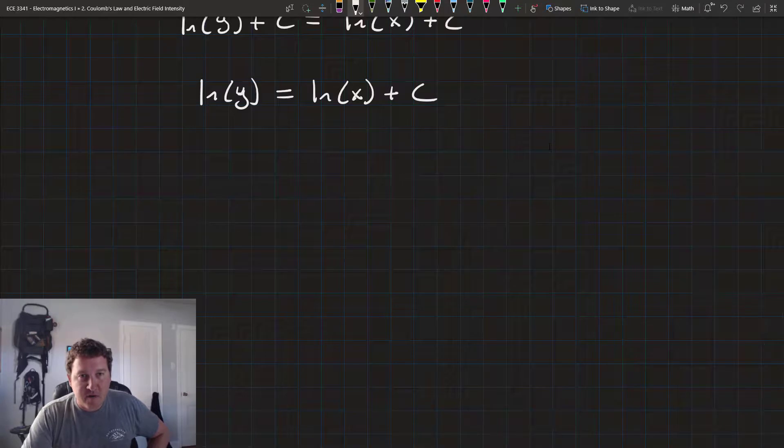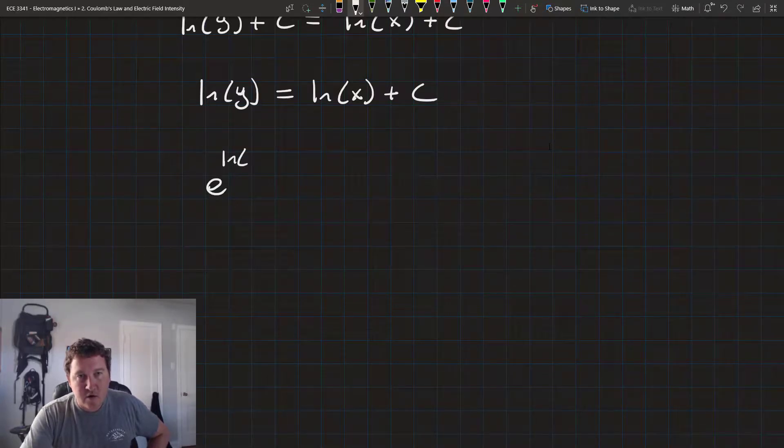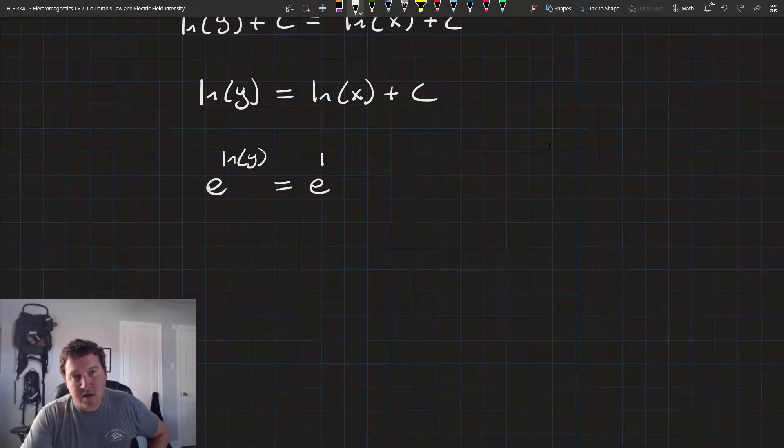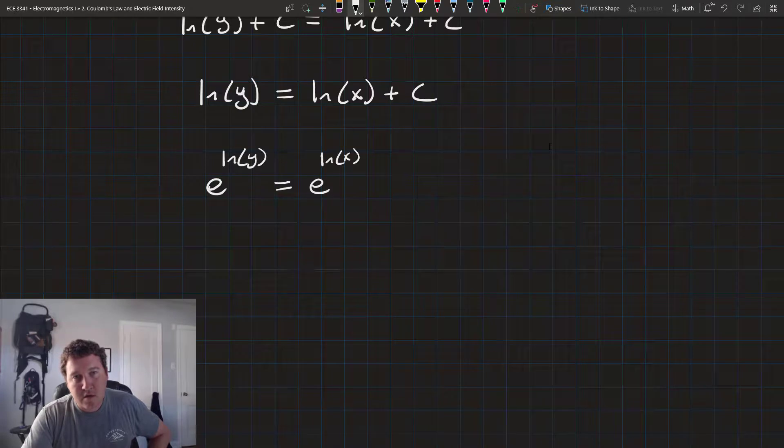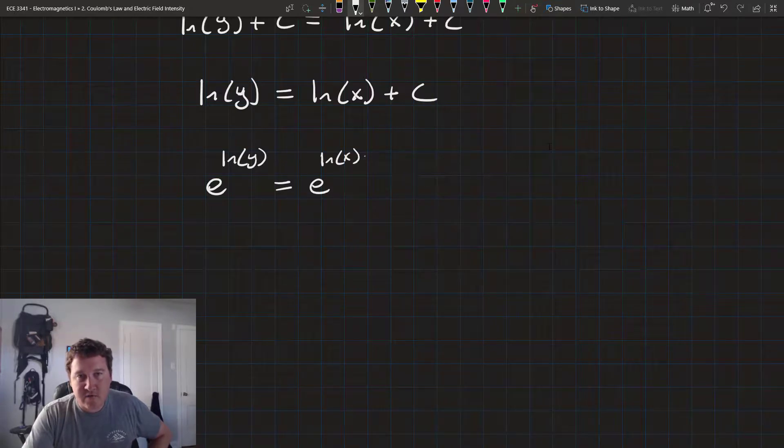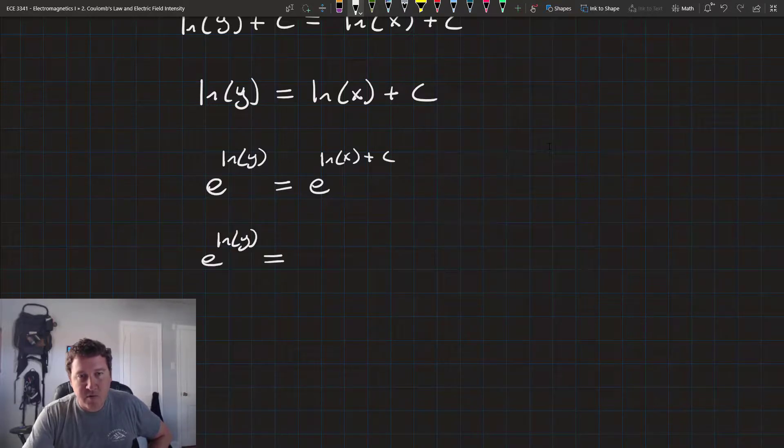Now, we can simplify this even farther by raising each side. Or rather, by taking Euler's constant, e, raised to each side. So, e to the natural log of y equals e to the natural log of x plus c.